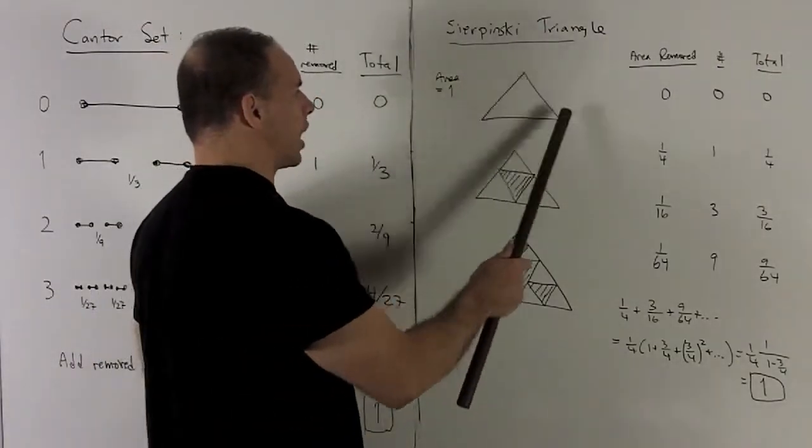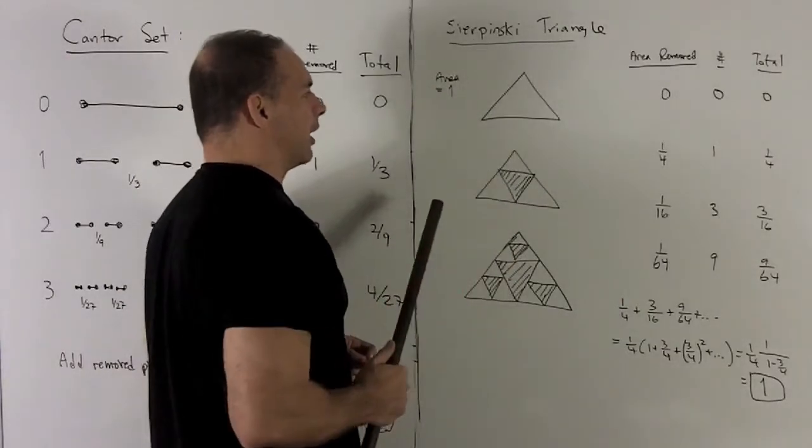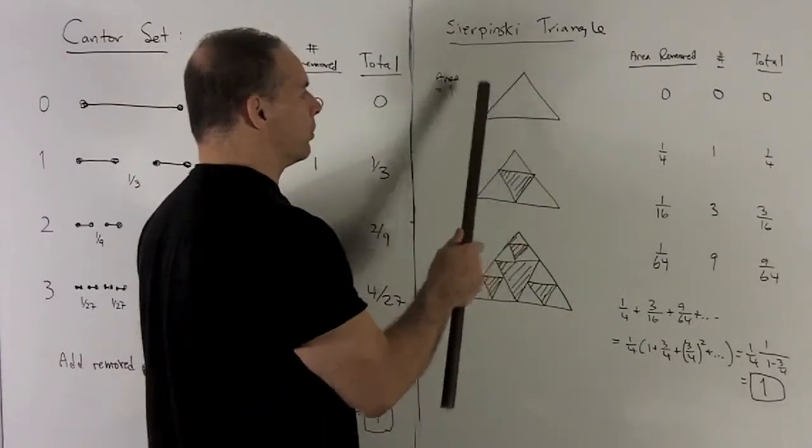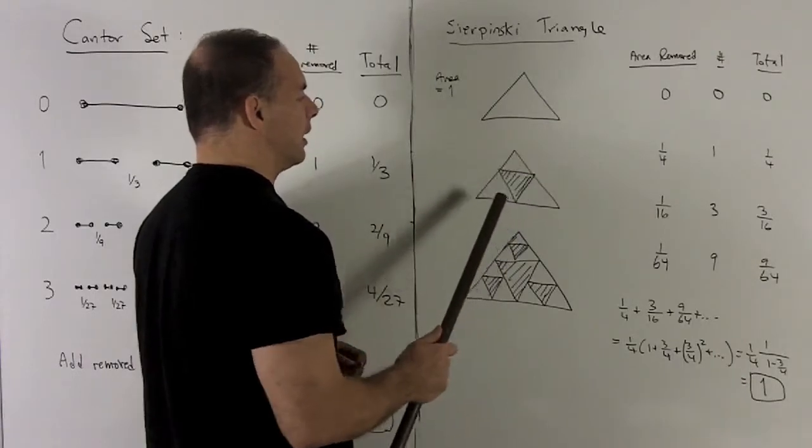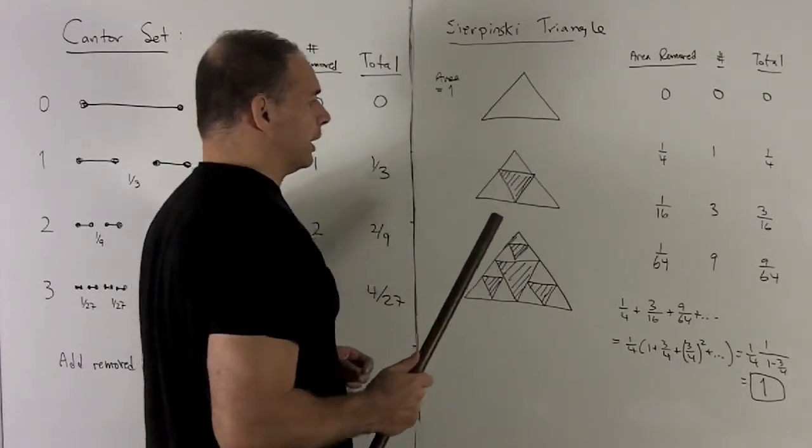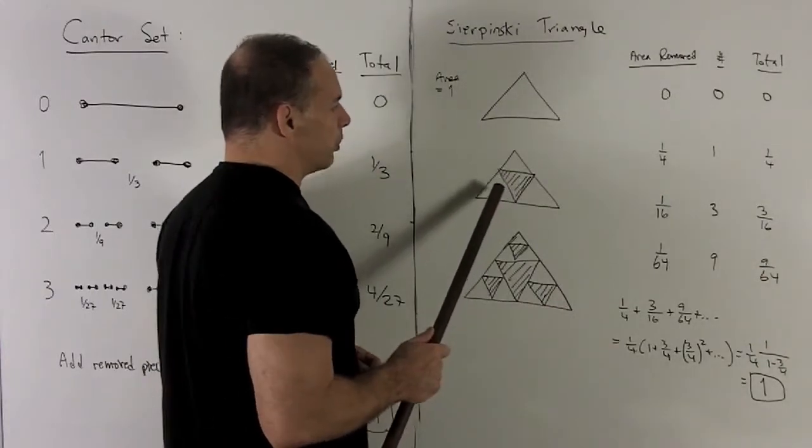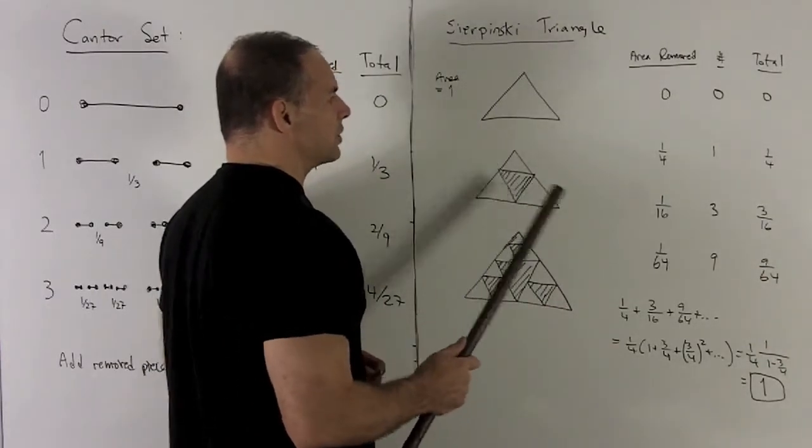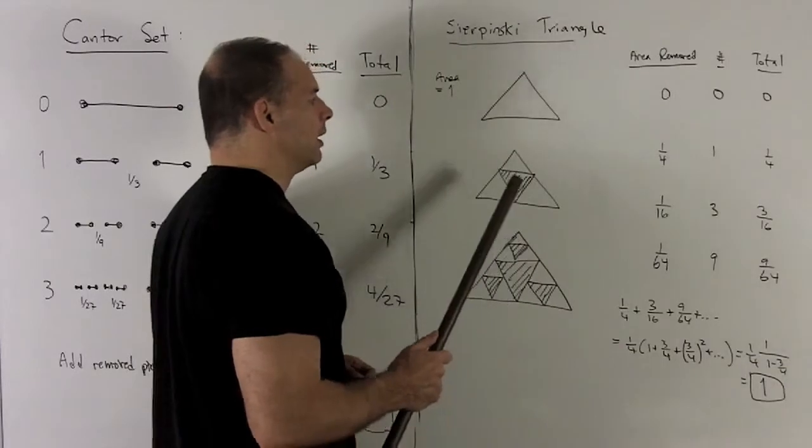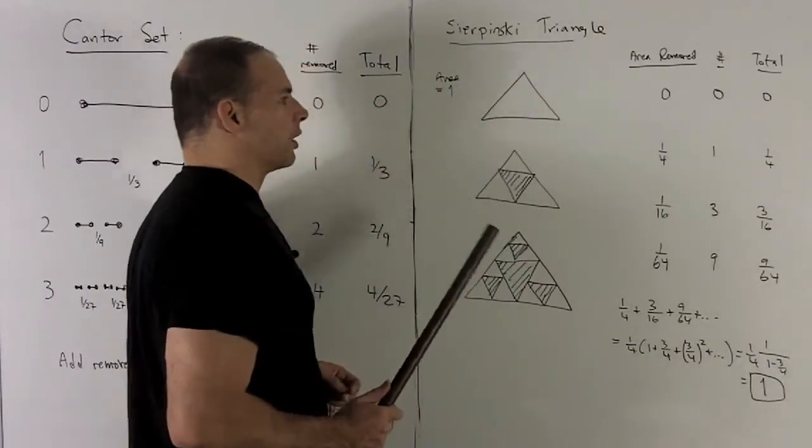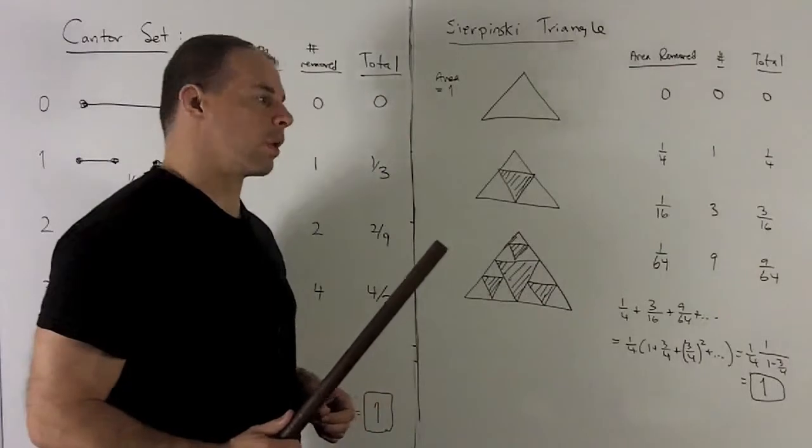We start off with the triangle, equilateral, area equal to one. I'm going to cut it up into four equal pieces, and then we're going to remove that middle equilateral triangle. So what do we just do? The area I just removed—there are four of these, so I just pulled out one fourth, and I've pulled it out of one triangle. So the total area removed is one fourth.